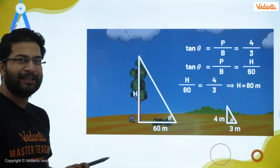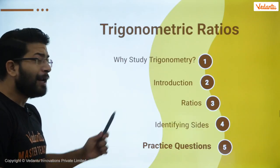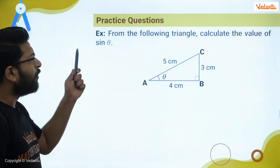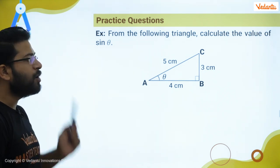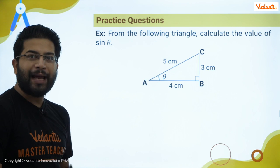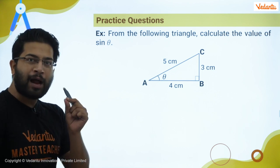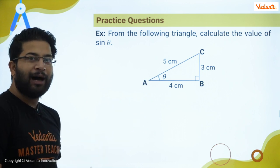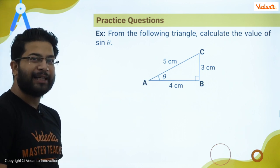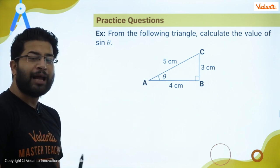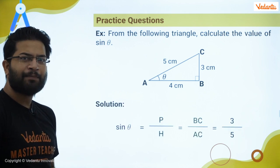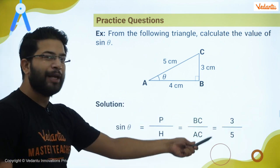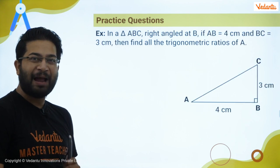Now let's look at a question: from a given triangle, calculate sin theta. Sin theta is perpendicular upon hypotenuse. The perpendicular is the side opposite theta, and the hypotenuse is opposite the 90-degree angle. So sin theta equals BC upon AC, which is 3 upon 5.